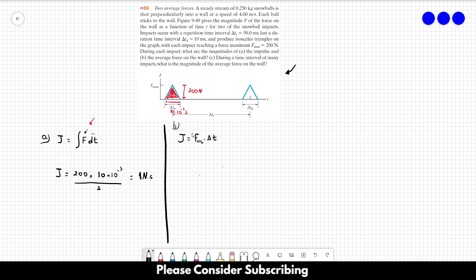This only works if f is constant. In this case it's not. However, we're taking the average force. Okay, so the average force is equal to j over delta t. And in our case that's 1 over delta td, so that's 1 over 10 times 10 to the minus 3, and this gives us 100 newtons. So that's the average force on the wall by one snowball.